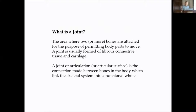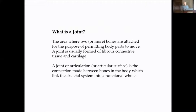So — what is a joint? A joint is where two or more bones attach for the purpose of permitting the body to move. A joint is usually formed of fibrous connective tissue and cartilage. A joint or articulation is a connection made between bones of the body which links the skeletal system into a functional whole. Like Tom Myers' Anatomy Trains shows fascia and muscle, from a skeletal perspective you're talking about these interconnections of joints making up the whole body.